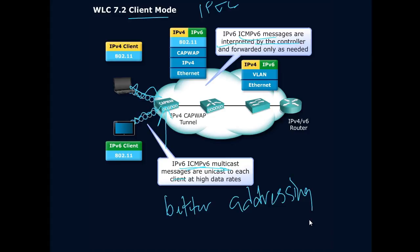Not everybody was receiving neighbor discovery messages and router advertisements — better addressing. I could even stop router advertisements that weren't meant to be sent, so other routers in the environment couldn't take over the SLAAC process and start addressing wireless clients. Very important. This also saved batteries on laptops and mobile devices, because they don't have to process every single one of those ICMPv6 multicast messages — because multicast messages are now converted to unicast at the wireless LAN controller level.